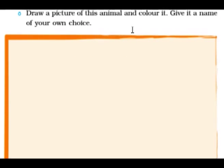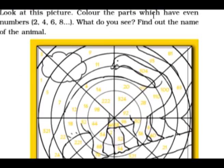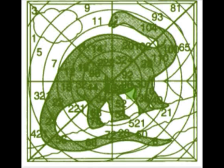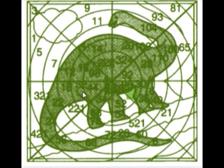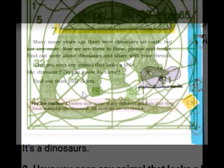Draw a picture of this animal and color it, and give it a name of your own choice. You can color the parts which have even numbers: 2, 4, 6, 8. If you color it, you will find a picture like this. What animal is this? It's a dinosaur!